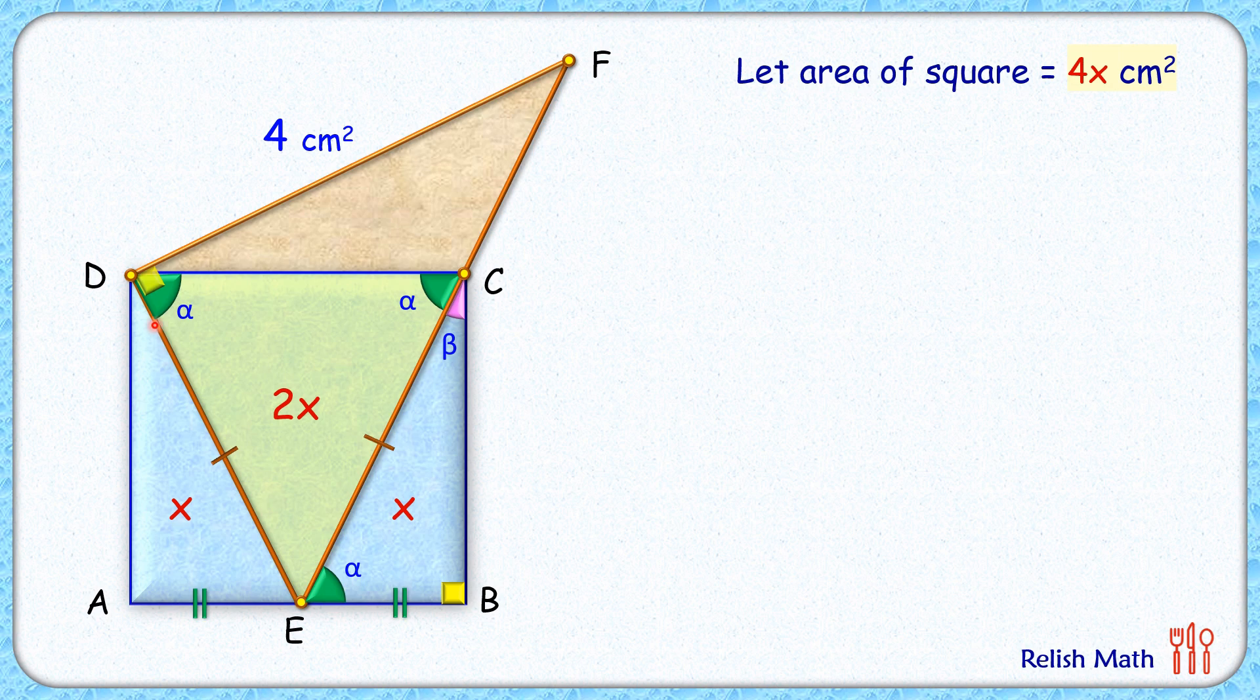Also, this full angle D is 90 degrees, so this remaining angle will be beta degrees. Now let's do a small construction and extend BC to meet DF at point G. Now angle C is 90, so this angle on top will be 90 degrees. As alpha and beta are complementary, this angle here will be alpha degrees.